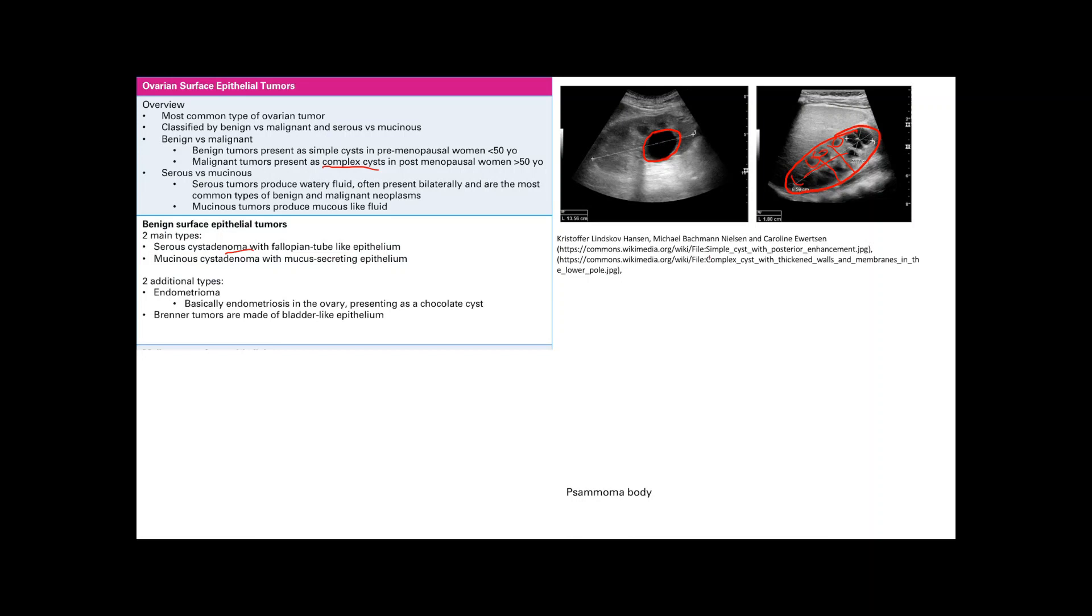There's two other types of surface epithelial tumors that are benign. There's the endometrioma—that's basically endometriosis whenever it reaches the ovary. As we reviewed before, it presents as a chocolate cyst. And then Brenner tumors are made of a bladder-like epithelium and these are benign.